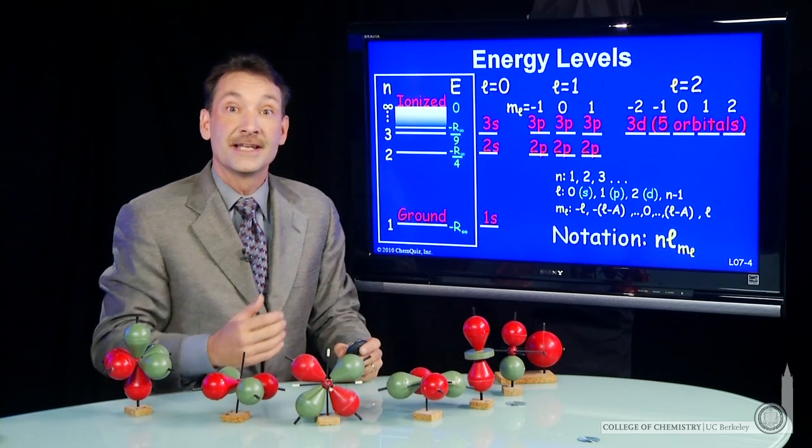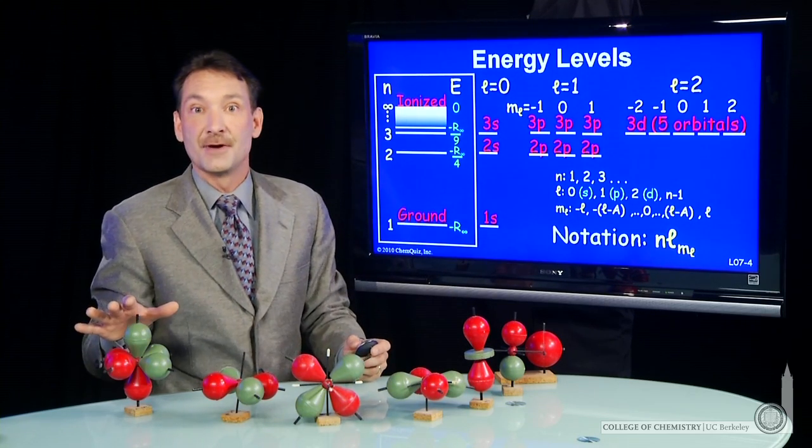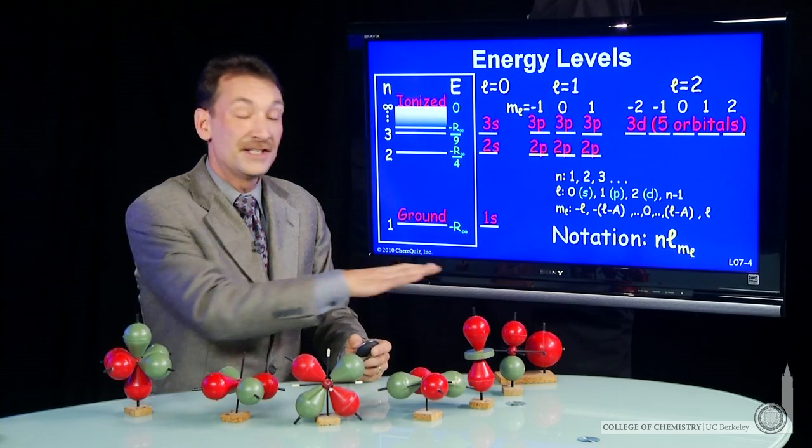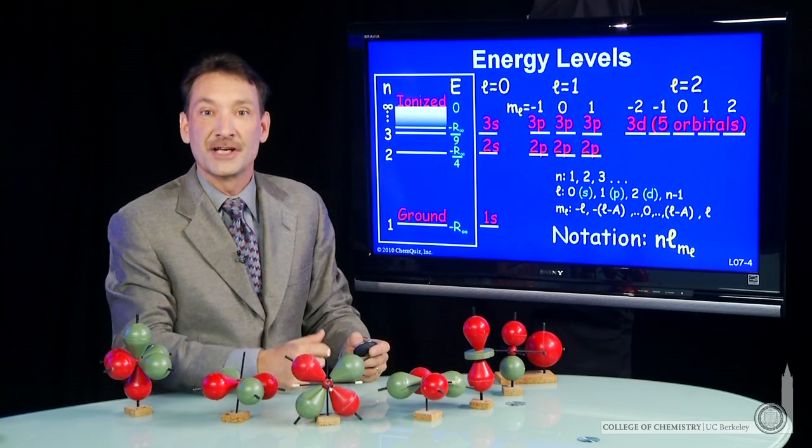So you can see an electron can exist in a myriad of different states around the atom. And when you have more than one electron, they need to share these states. So that's what we'll look at next.